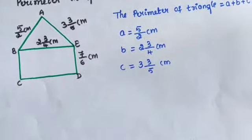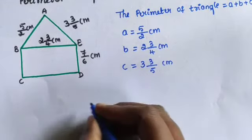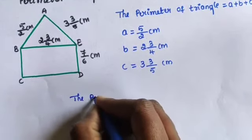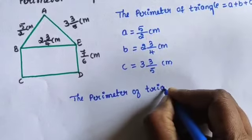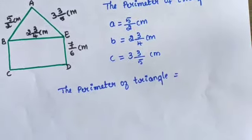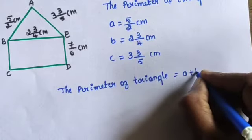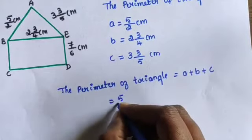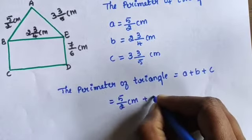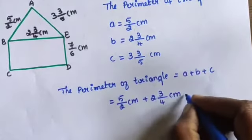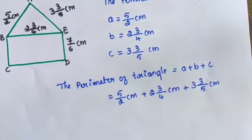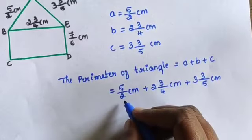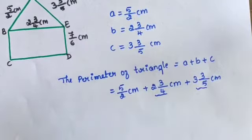Then apply the values of A, B and C. The perimeter of triangle ABE equals A plus B plus C: 5/2 cm plus 2¾ cm plus 3⅗ cm. 5/2 is an improper fraction; 2¾ and 3⅗ are mixed fractions. Convert them into improper fractions.